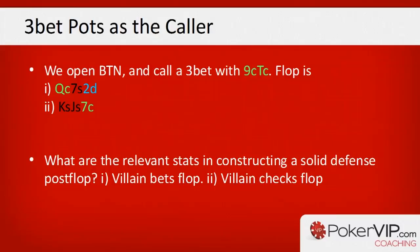On the second type of flop texture — a drawy board — we have additional options. We want to think about bluff-raising, but that doesn't mean floating is incorrect. We need to decide whether to float nine-ten of clubs on the king-jack-seven board or to bluff-raise, and find out which is the best exploitative option.